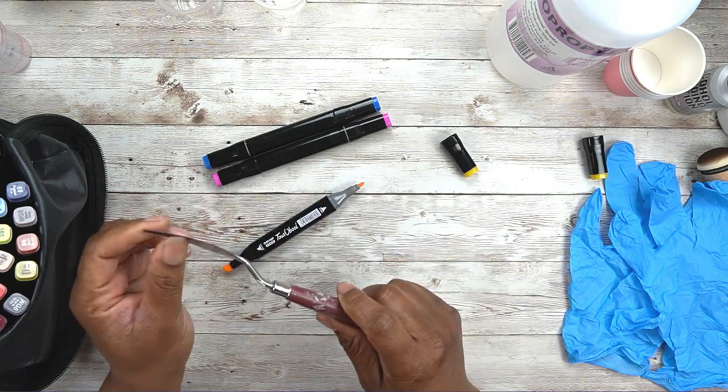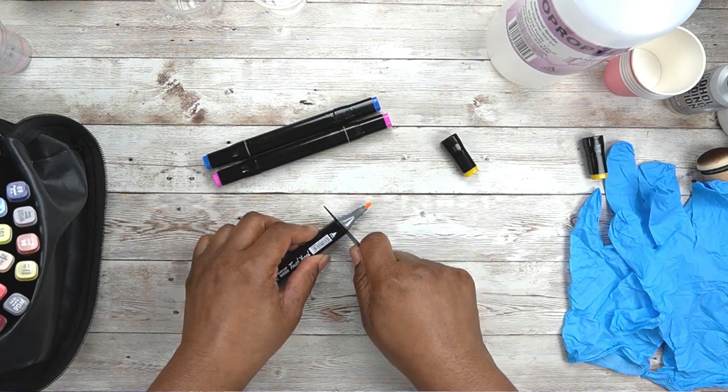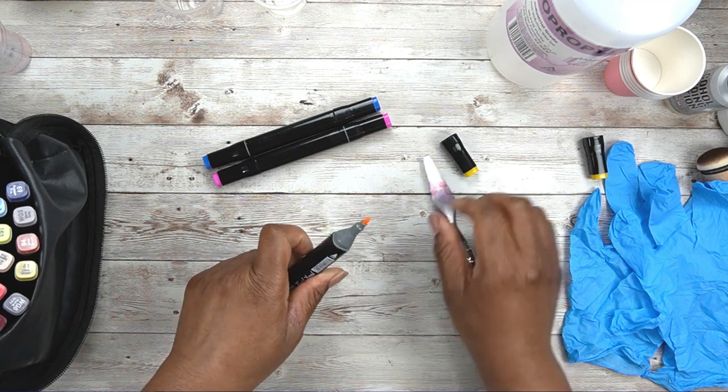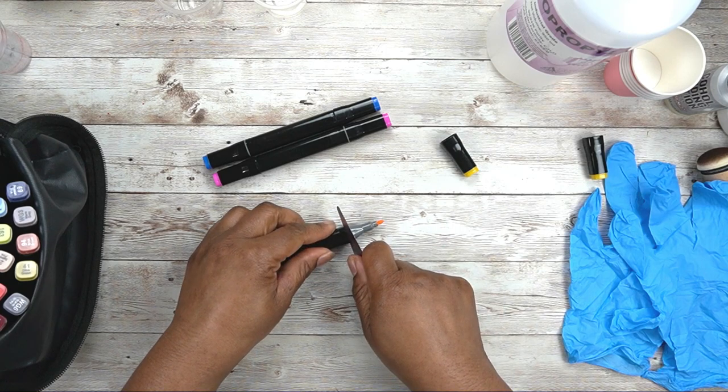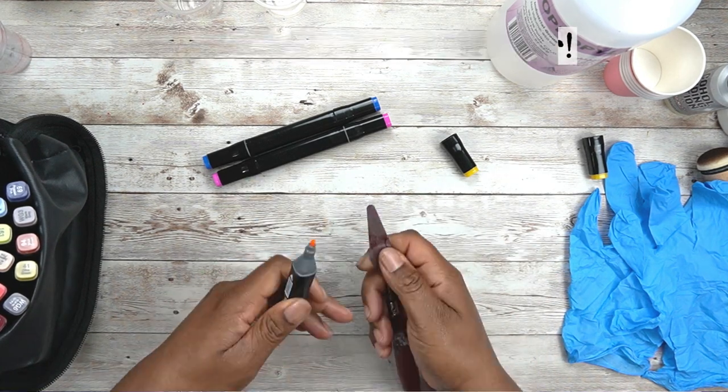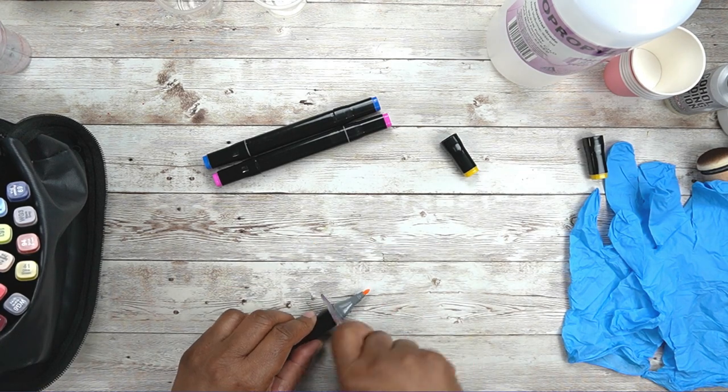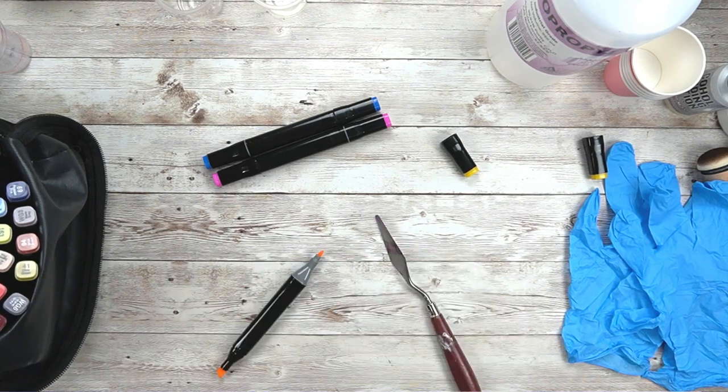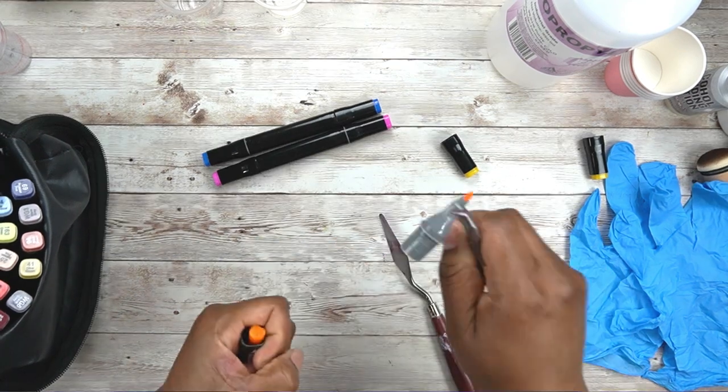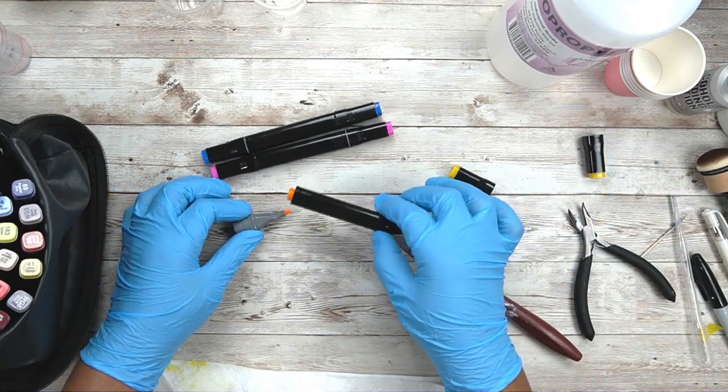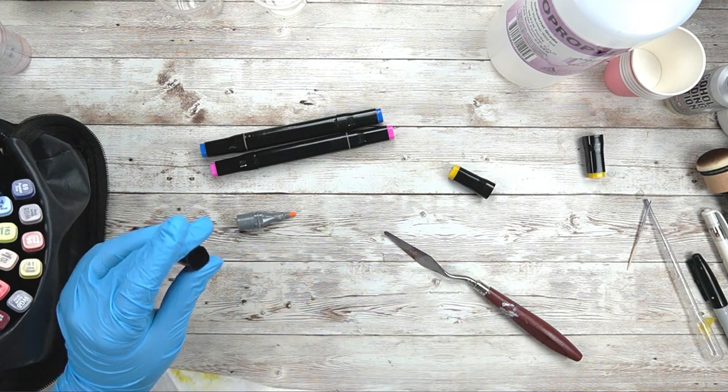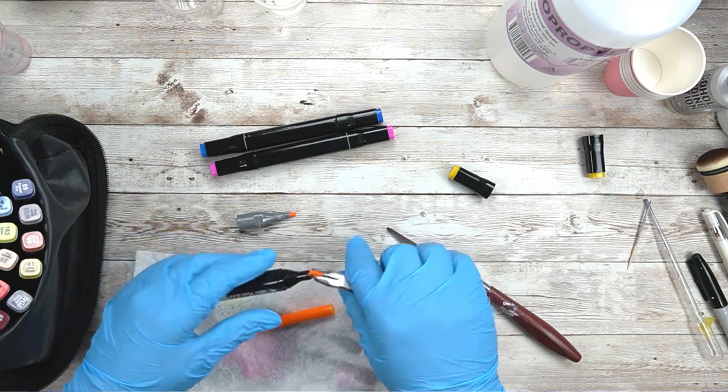But what I'm going in with is, this is just a regular old pallet knife. And you just want to find the seam in the markers. Now, I know that these have a seam here. And you just want to wedge whatever tool that you're using into the seam so that the marker will, the tip part will come away from the base of the marker. I got the base away from this tip. And so, what you want to do is, you just want to pull out this part here, the tube.